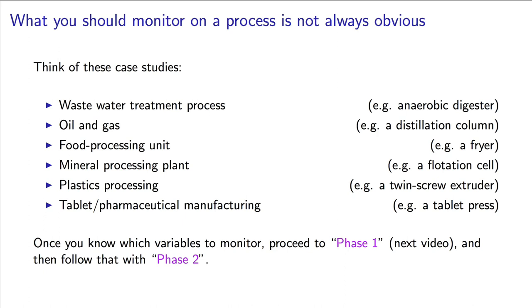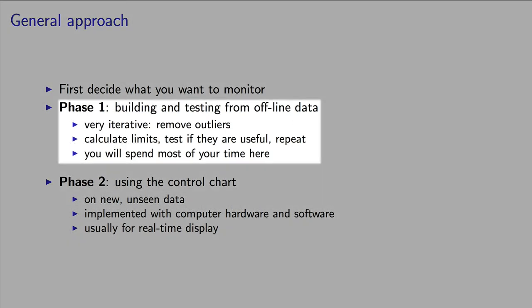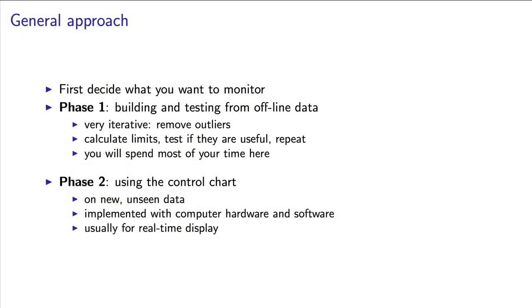Once you have identified which variable you would like to monitor, we can then go and start constructing a monitoring chart — figuring out what the upper control limit should be, what the lower control limit should be, and what the target value should be. In the process monitoring literature, that step of building the chart, figuring out those limits and testing the chart on prior operating data, is called phase one. This is where you will spend most of your time as an engineer. Phase two is the phase where we go and use this chart on new data that we've never seen before — this is where the operators and the final end users of your chart will spend their time. In the next video, we will look at the phase one construction of a Shewhart chart.